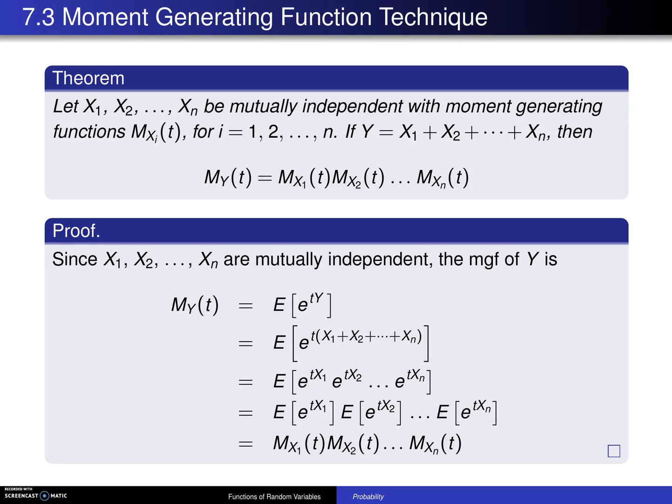Section 7.1 considered the cumulative distribution function technique for finding the distribution of functions of random variables. Section 7.2 considered the transformation technique for finding the distribution of functions of random variables. We now move to the last section, 7.3, which is known as the moment generating function technique. This is not as general as the first two techniques, but it works very nicely on sums of random variables.